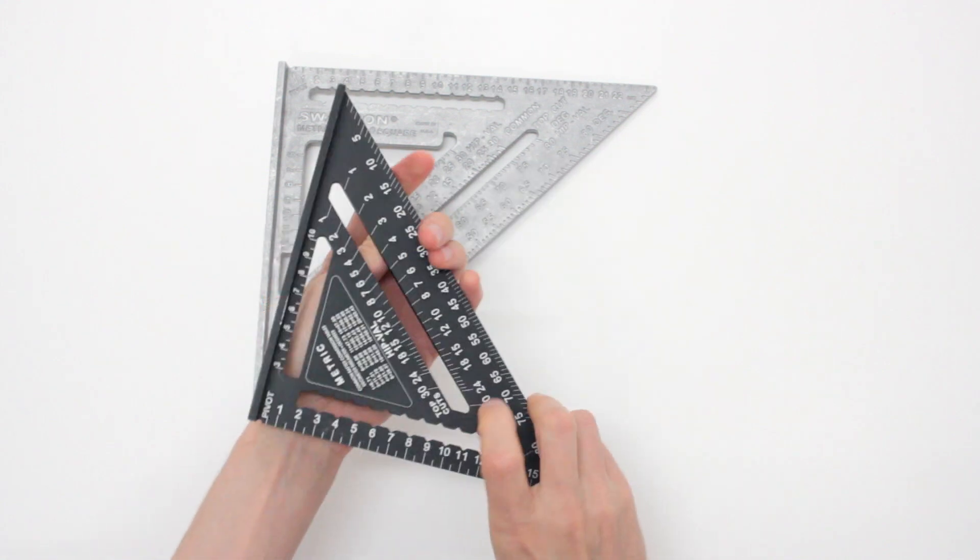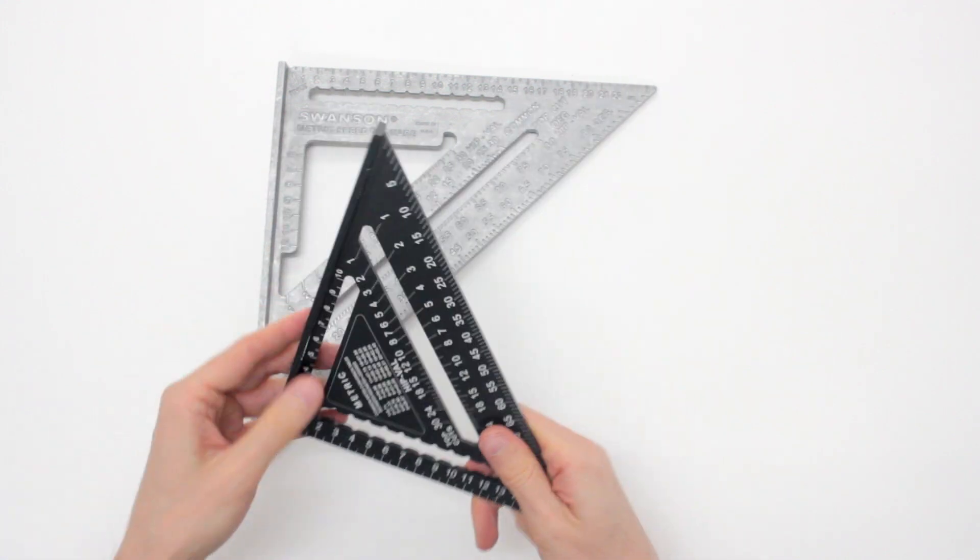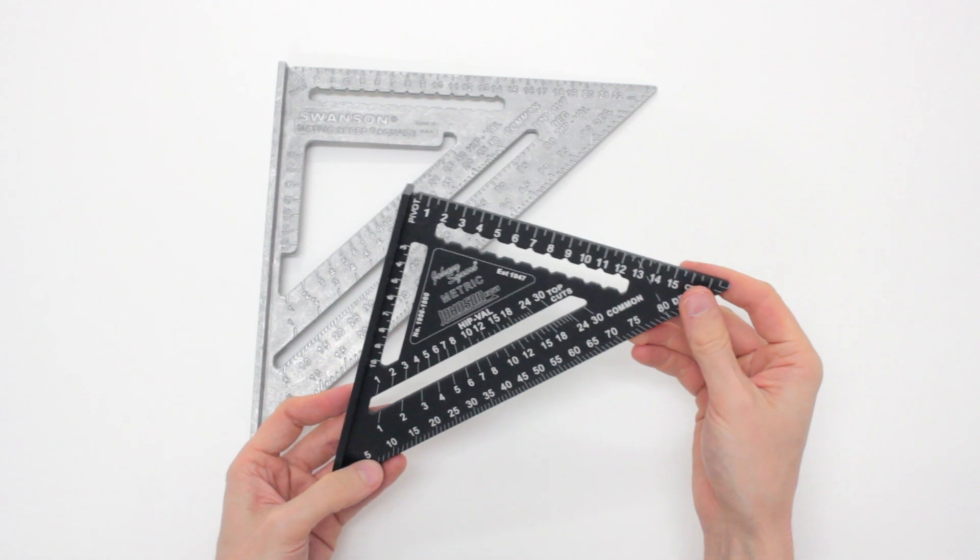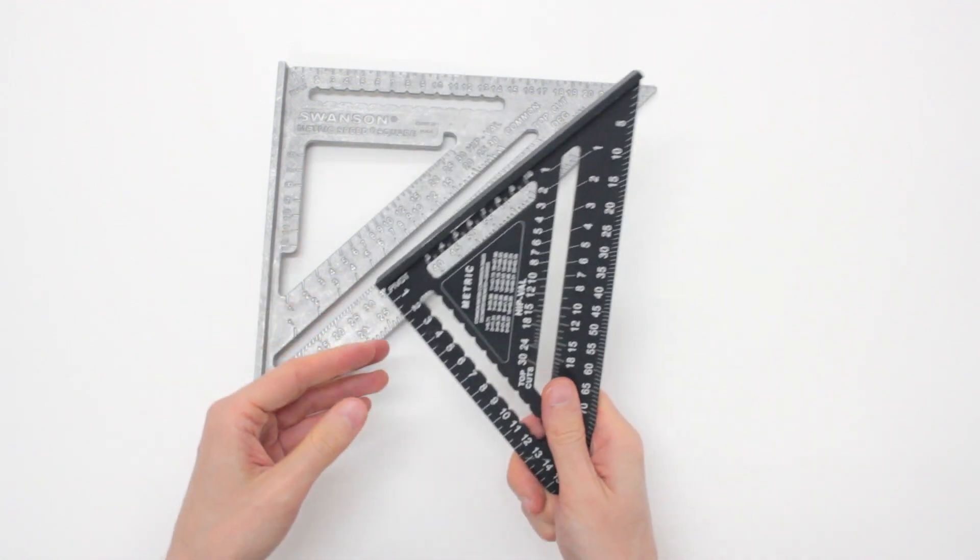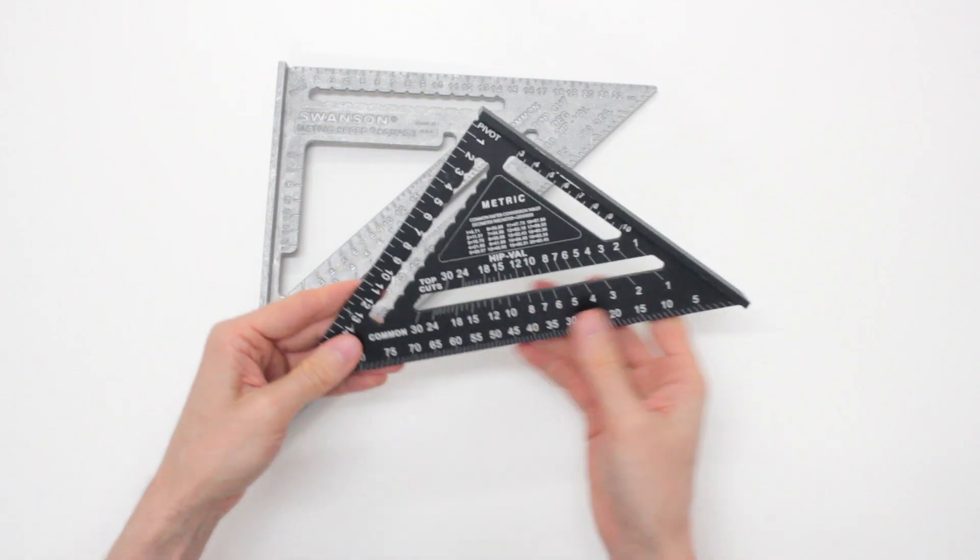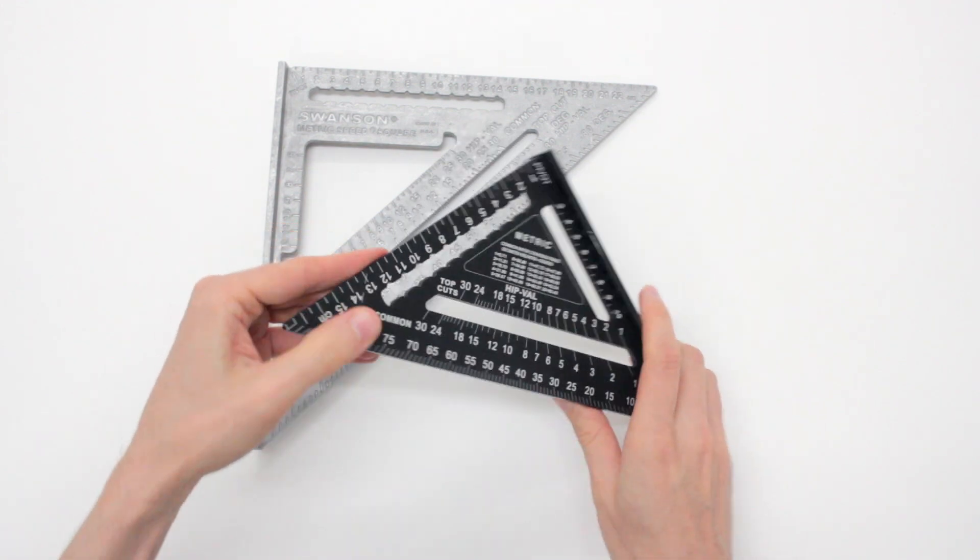And, as you might have guessed, I prefer this Johnson because, for me, a speed square is all about speed and being available on you at all times. That's kind of the idea behind the speed square.